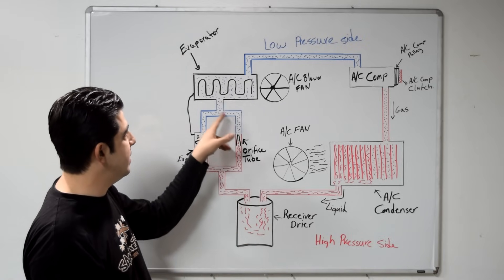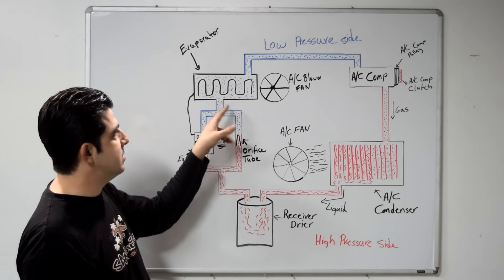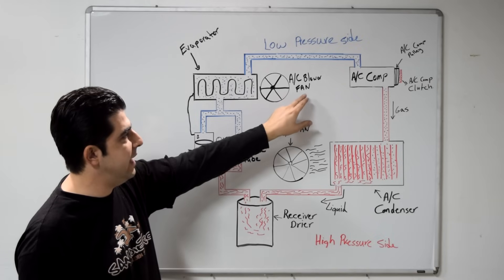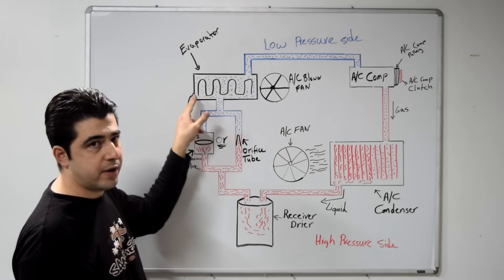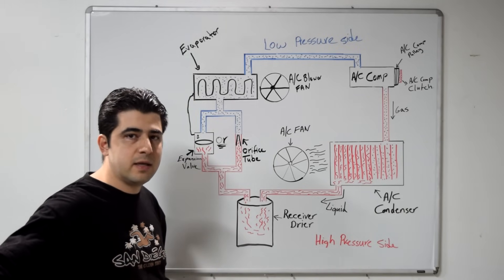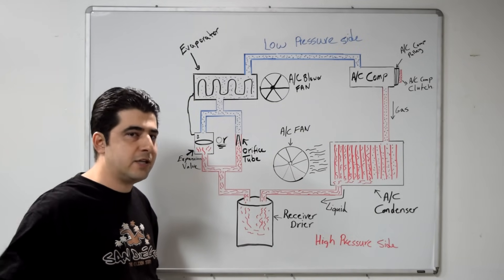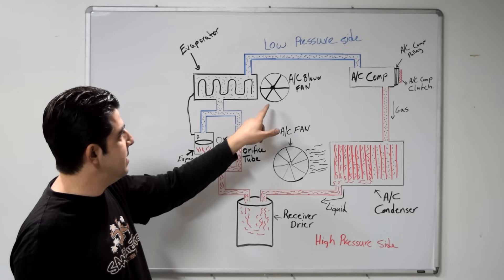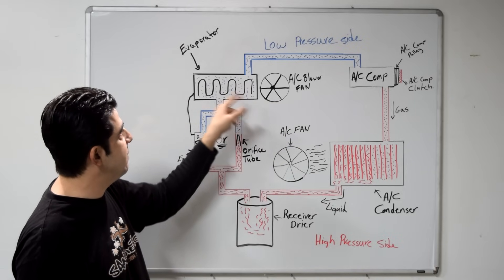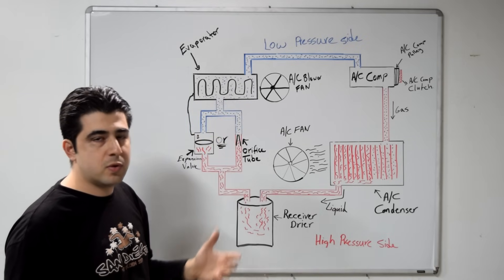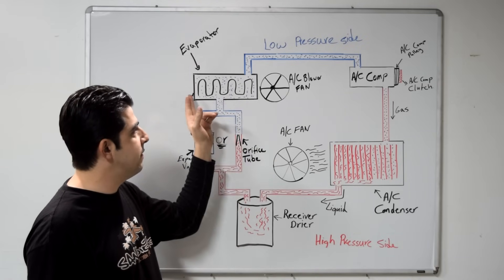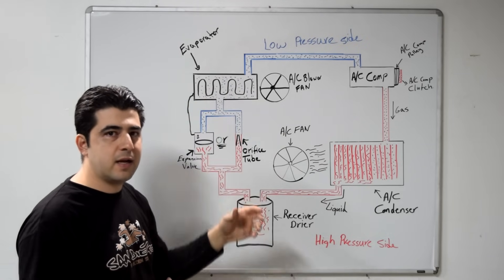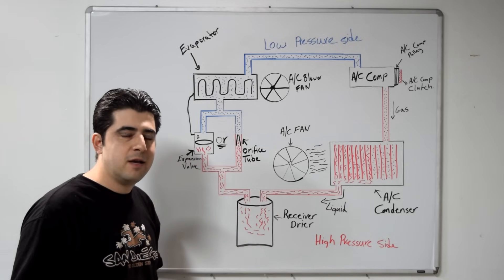When that happens, the refrigerant — now at its coolest state — reaches your evaporator. Your evaporator is usually inside your car underneath your dash, and your AC blower fan, usually underneath your glove box, blows air over it. The evaporator absorbs heat from that air, cooling it down. That cooled air then travels through your dash and comes out your vents as very nice, chilly, cool air.